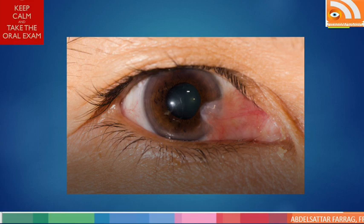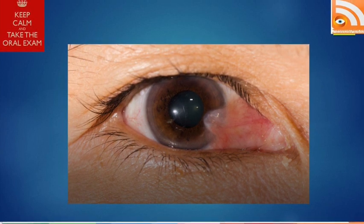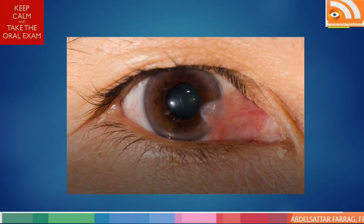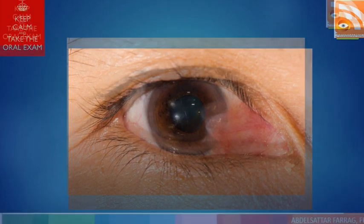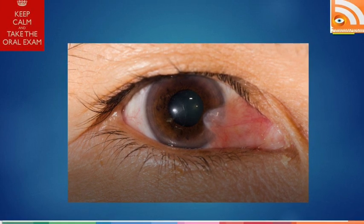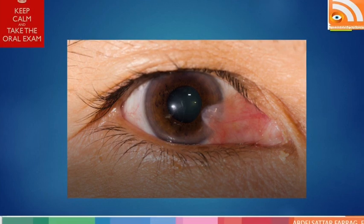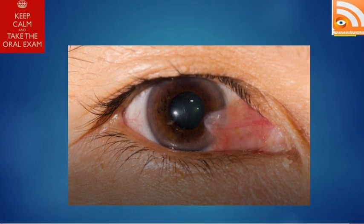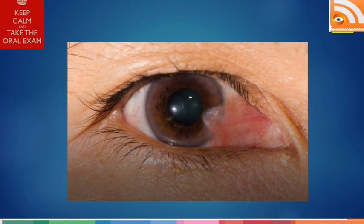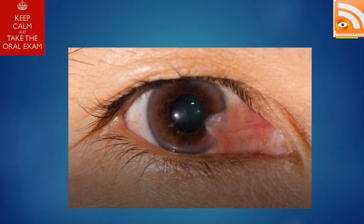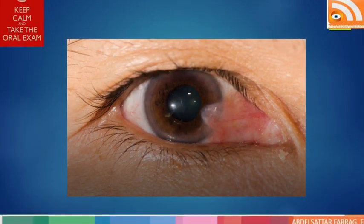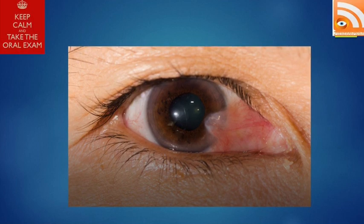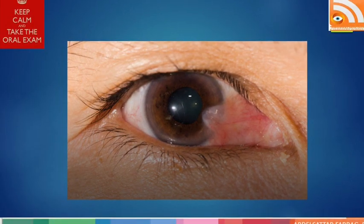I recommend that when you describe, you do so in more detail and comment on other structures of the anterior segment, even if they are normal. For instance, you should say: lids are normal, conjunctiva shows a pterygium which encroaches over the conjunctiva but does not involve the visual axis.